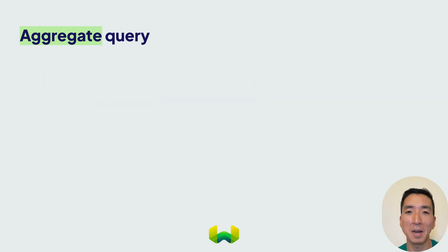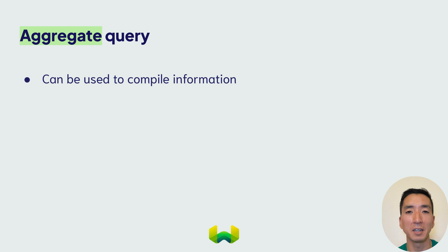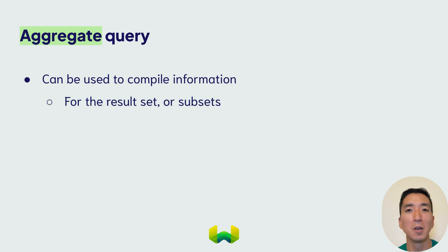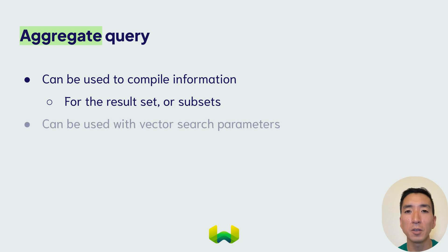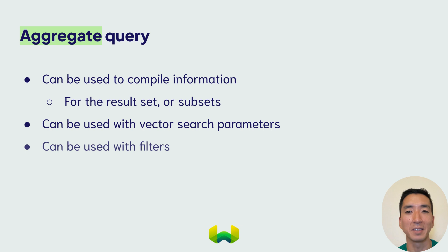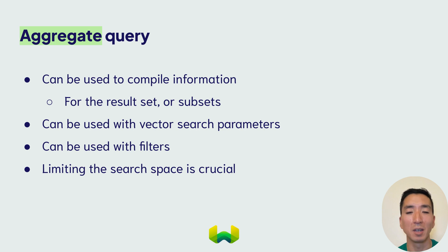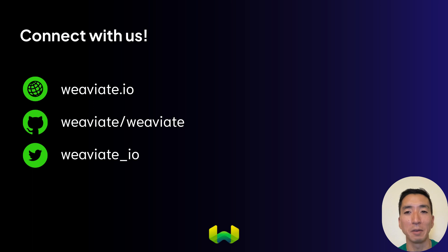The aggregate function is a powerful tool that helps you compile information from multiple objects. You can use it to gain an overview of the search results, or even subsets of results, whether by themselves or in comparison to the rest of the dataset. You can use them with vector search parameters as well as filters, which you'll learn about in the next section. And remember that with aggregate queries, it is very important to limit search space with some sort of a threshold. That's it for this video on aggregate queries on Weaviate. Thanks for watching, and we'll see you soon.